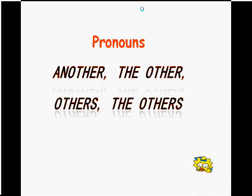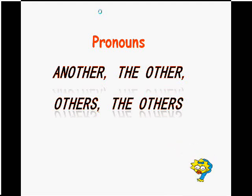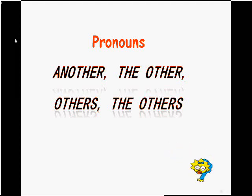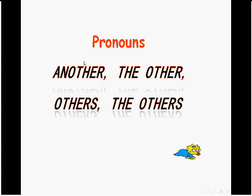We'll start by defining these words: another, the other, others, and the others are pronouns. Later on, we'll find out that some of these words are also adjectives. Remember from our first term when we talked about pronouns — pronouns are words used in the place of a noun. The most prominent pronouns are he, she, it, they, we, you, him, her, and so on.